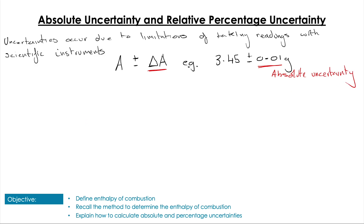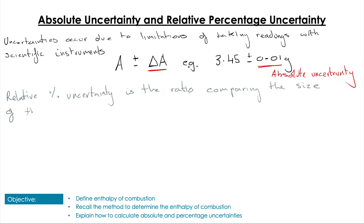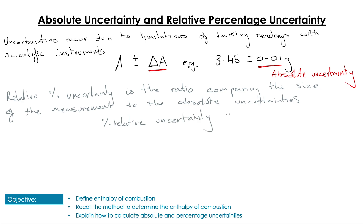The absolute uncertainty remains the same no matter what we measure with that instrument. However, relative percentage uncertainty helps us understand how large that absolute uncertainty is in comparison to the measurement itself. We use a simple calculation: take the absolute uncertainty, divide it by the measurement, and multiply by 100 to give the value as a percentage.